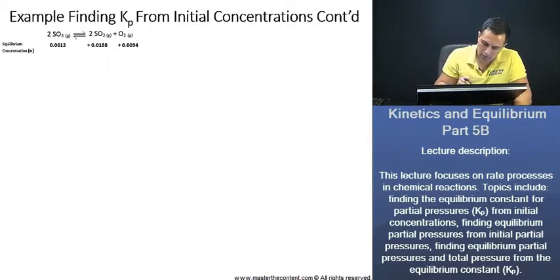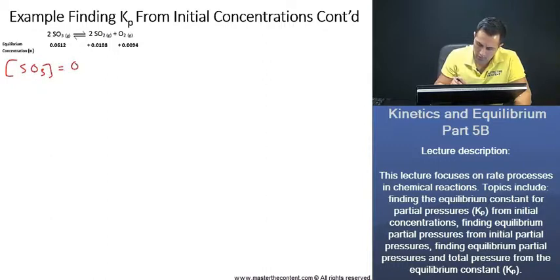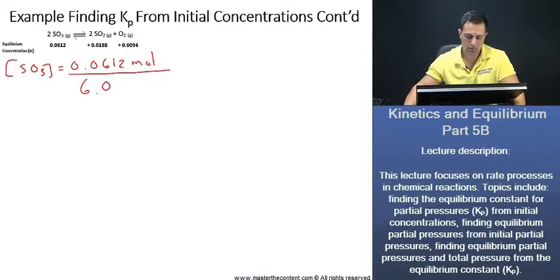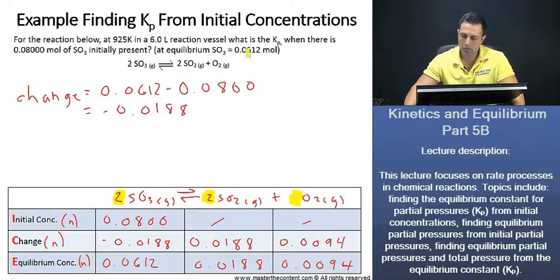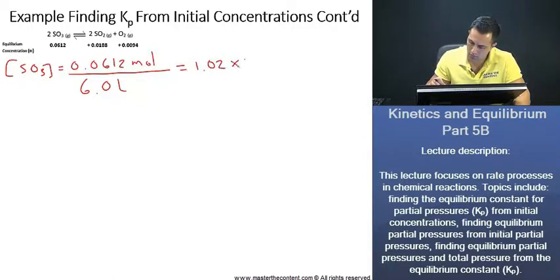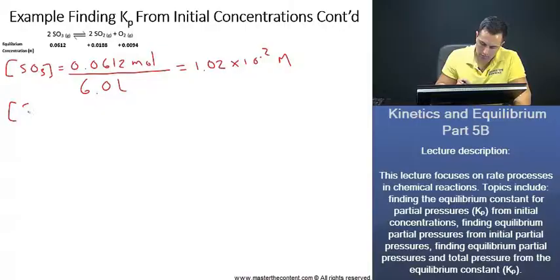We'll begin here with sulfur trioxide, which we see as 0.0612 moles over... Remember, we said that we had 6 liters. We were told that in a 6 liter reaction vessel, that's where I'm getting this 6 from now. 6 liters, once you go ahead and you do the math on that, you're going to end up with a value of 1.02 times 10 to the power of negative 2 molarity. Now we can do the same for sulfur dioxide.